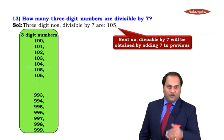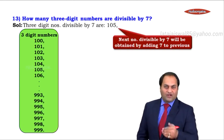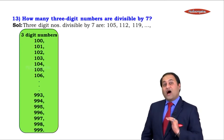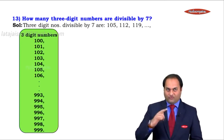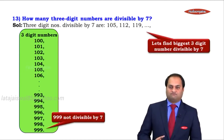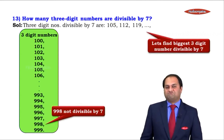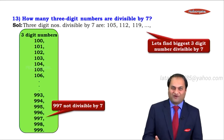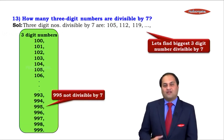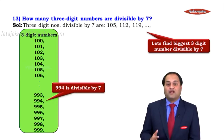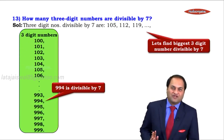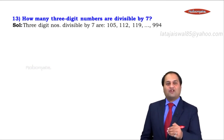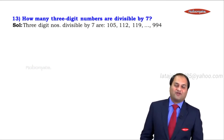The next number is found by adding 7, giving us 105, 112, 119, and so on. Now what is the last term? Is 999 divisible by 7? No. 998? No. 997? No. 996? No. 995? No. 994? Yes — it is divisible by 7. So our AP is 105, 112, 119, ... up to 994.